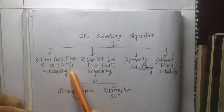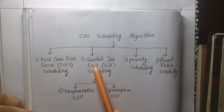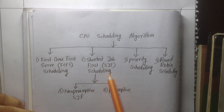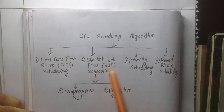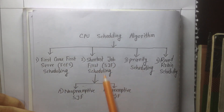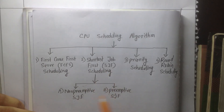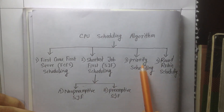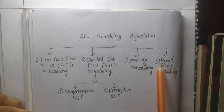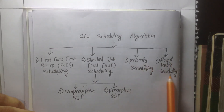This is the first-come-first-served scheduling. This is the shortest job first scheduling. This is the SJF — the non-preemptive SJF and preemptive SJF. This is the priority scheduling. This is the round robin scheduling.